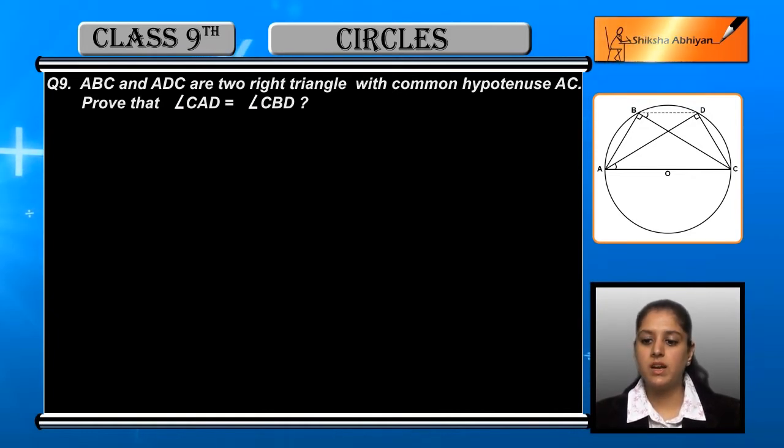So we can say that ACDB is a cyclic quadrilateral, because if we see this in the first line we have written that ABC and ADC these two angles are right angle triangles.